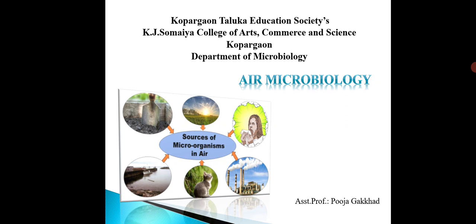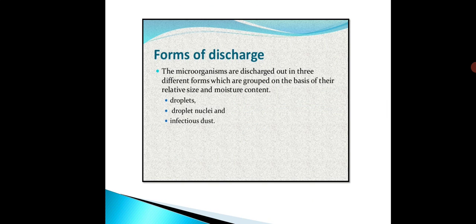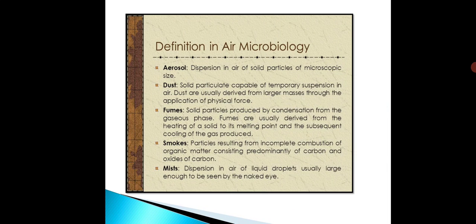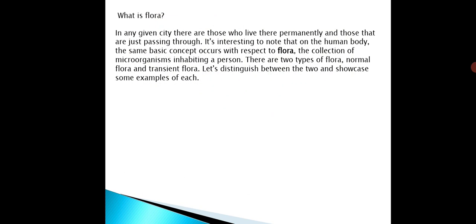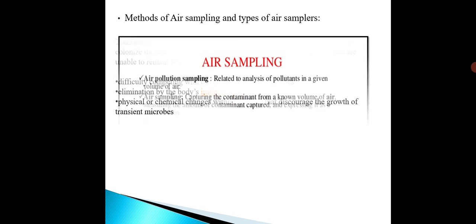In the previous video we discussed basic concepts of air microbiology — what is microbiology, what is air microbiology, the forms of discharge, that is how and in which forms microorganisms are suspended in the air. We discussed droplets, droplet nuclei and infectious dust, fumes, smokes and mist. In the second video lecture we covered air flora, the types of air flora: normal flora and transient flora.